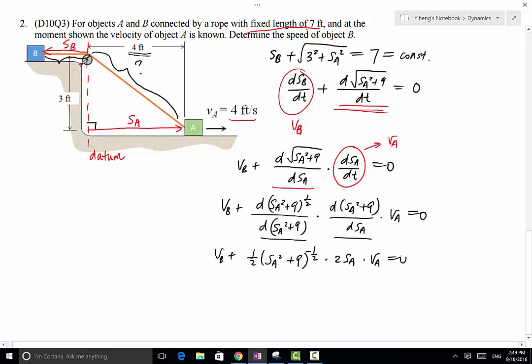And we know that at the moment shown, SA is 4, VA is also 4. So from here you can solve for VB to be negative 3.2 foot per second. So this is the answer. The negative sign simply represents that the velocity of object B is to the right. But remember, SB established in the way that left is positive. If you're trying to determine the speed, the speed is simply 3.2 foot per second.